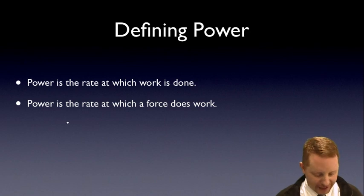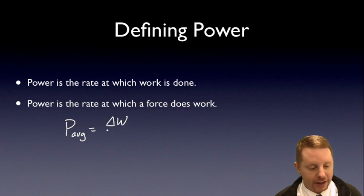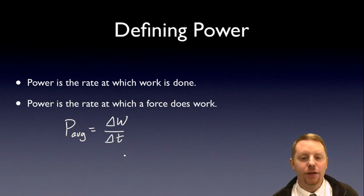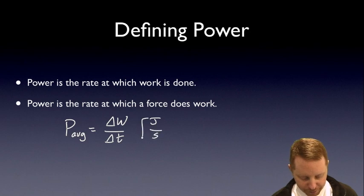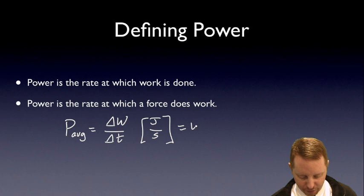Typically we would write the average power, P average, as the change in work done over some specified time interval. And the units of power then are going to be the units of work, joules, divided by units of time, per second. We also call a joule per second a watt.